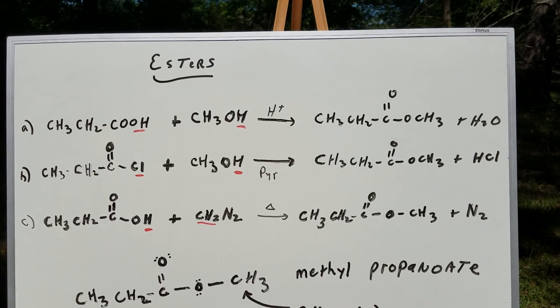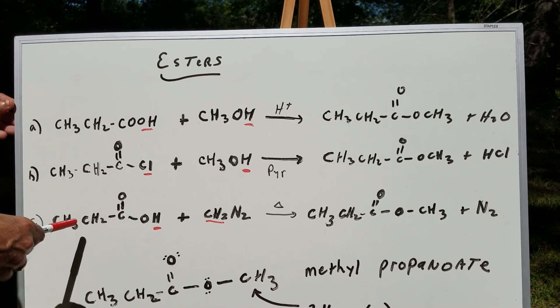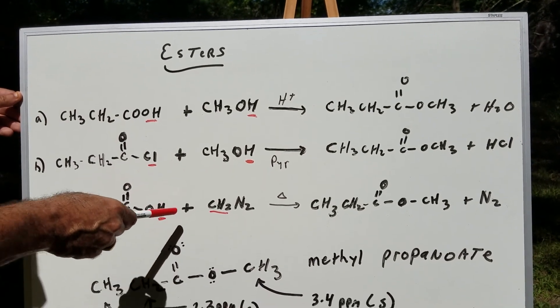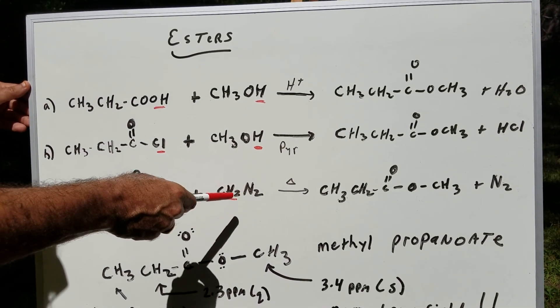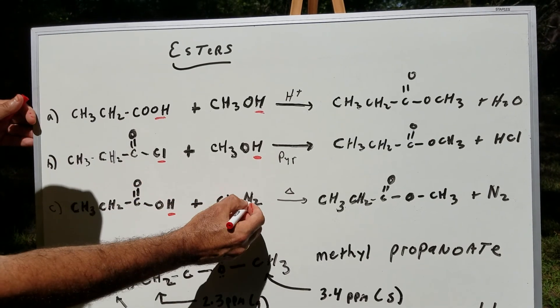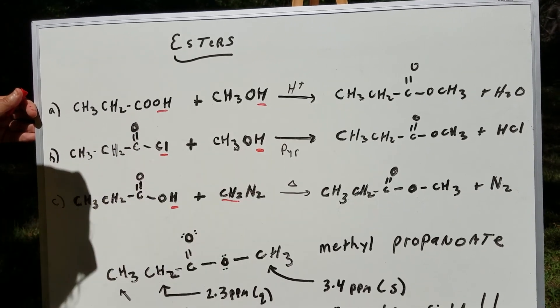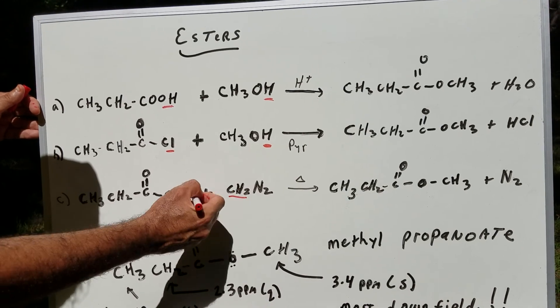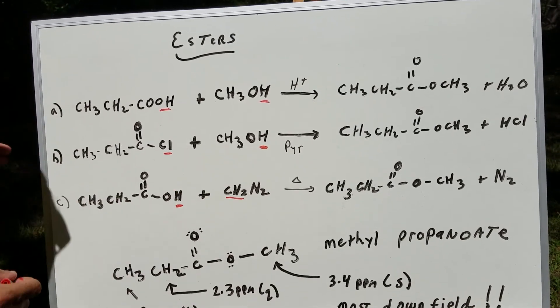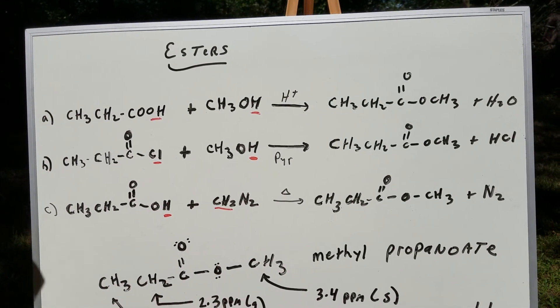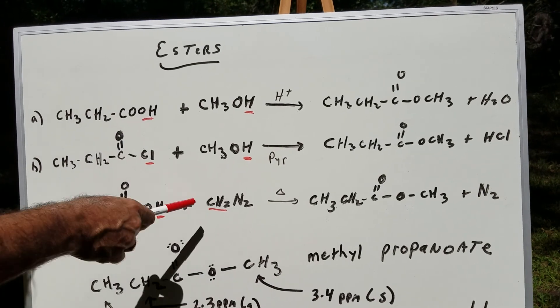Finally, if you took propanoic acid with diazomethane, you would simply knock off the N2, which is a great leaving group, and then envision the CH2 combining with the H to make CH3. I did the mechanism on this on another videotape. But as you can see, all three of these would give the same methyl ester.